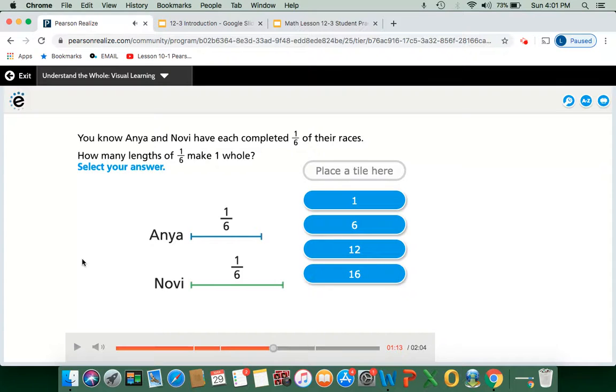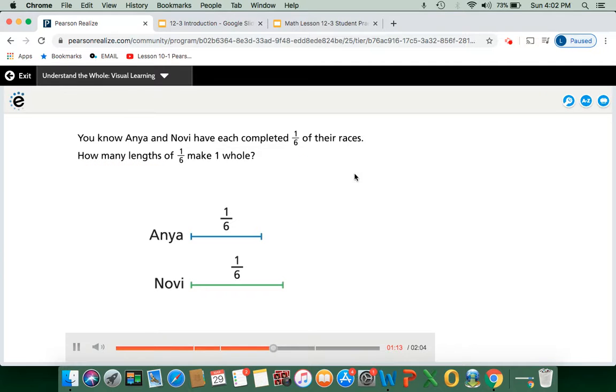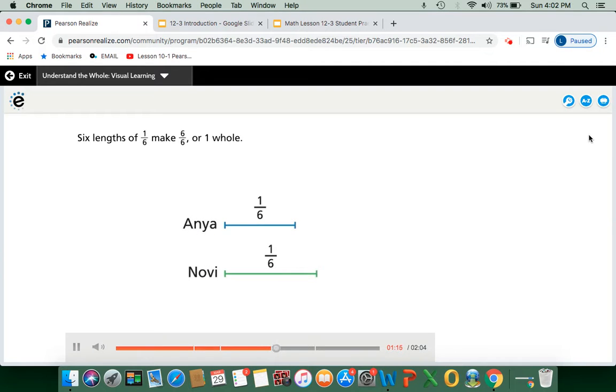How many lengths? Think about it for a second. Select your answer. Is it one? Is it six? Is it twelve or sixteen? Well, we know our total or whole is six, right? Six one-sixths. So it's going to be six. Six lengths of one-sixth make six-sixths, or one whole.